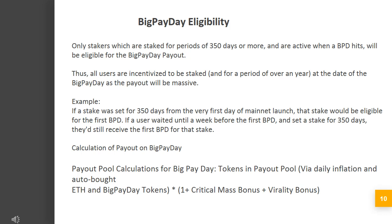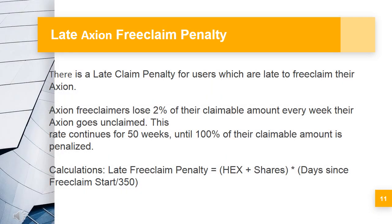Calculation of payout on Big Pay Day. The payout pool is calculated using tokens in the payout pool via daily inflation and auto-bought ETH, multiplied by: Big Pay Day tokens × (1 + critical mass bonus + virality bonus). Late Axion free claim penalty: there is a late claim penalty for users who are late to free claim their Axion. Axion free claimers lose 2% of their claimable amount every week their Axion goes unclaimed. This rate continues for 50 weeks until 100% of their claimable amount is penalized. Late free claim penalty = HEX shares × (days since free claim start / 350).